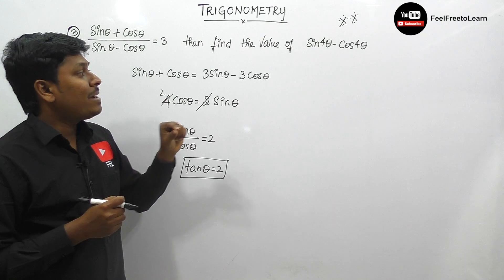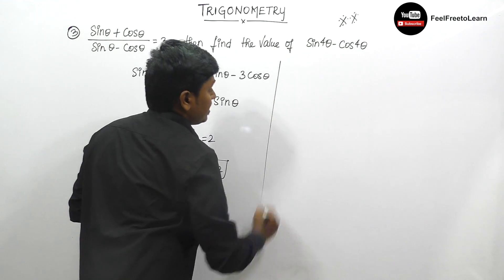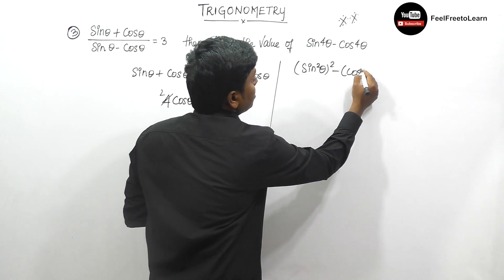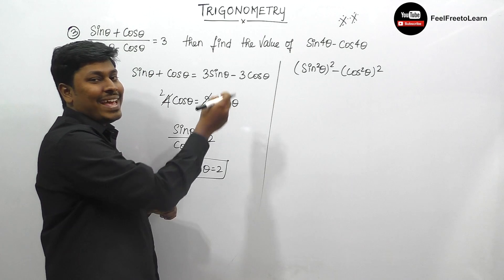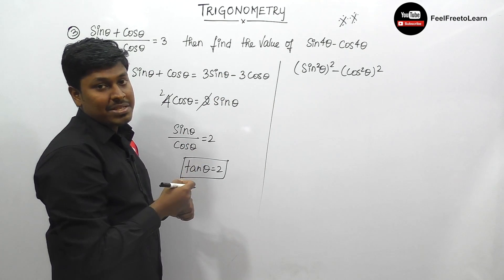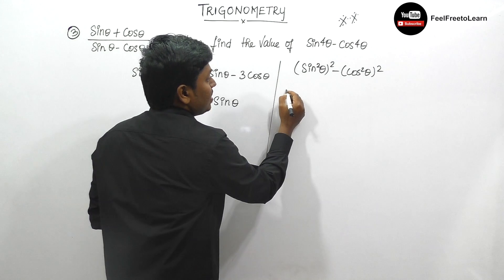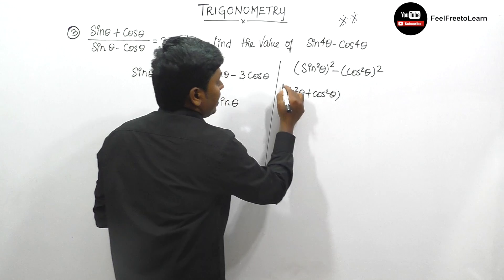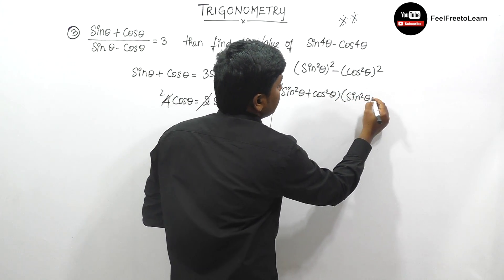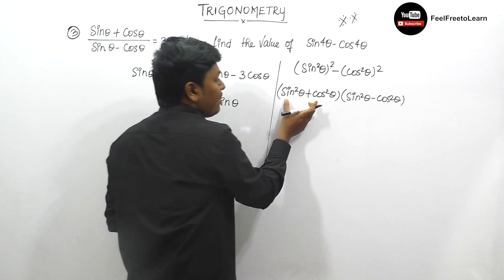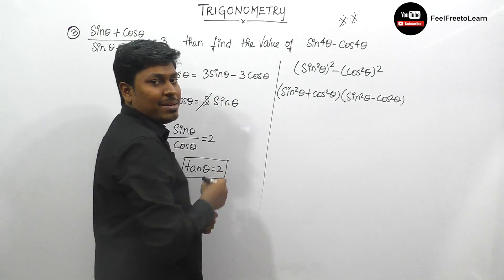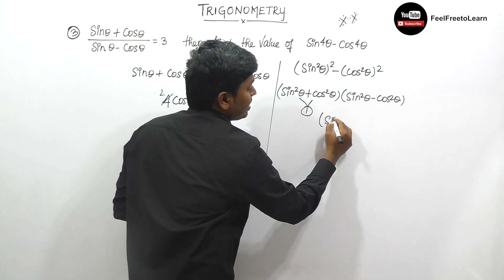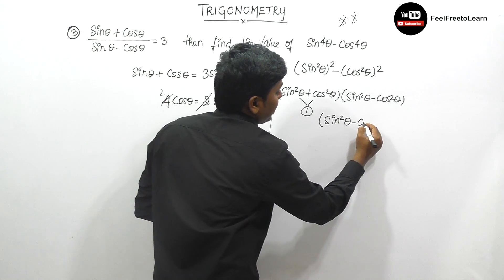sin⁴θ minus cos⁴θ can be written as (sin²θ)² minus (cos²θ)², which is the format a² minus b². Using the identity a² minus b² equals (a+b)(a−b), this becomes (sin²θ + cos²θ)(sin²θ − cos²θ). Since sin²θ plus cos²θ equals 1, we are left with sin²θ minus cos²θ.